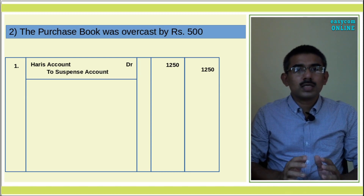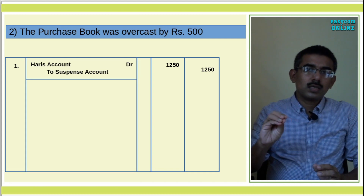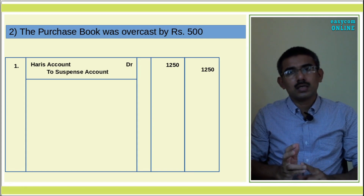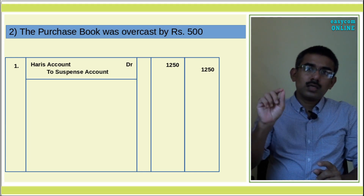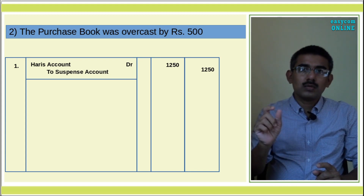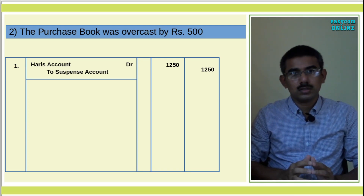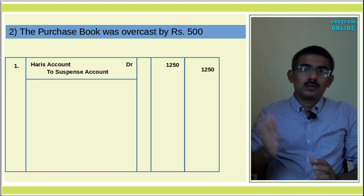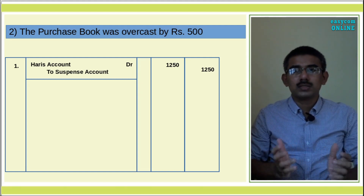Error 2: The purchase book was overcast by Rs.500. The purchase account is therefore overcast by Rs.500.